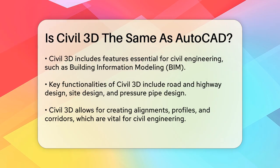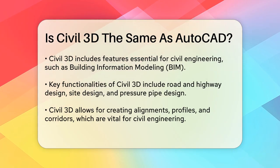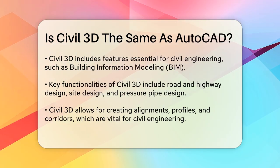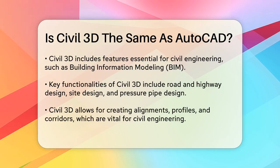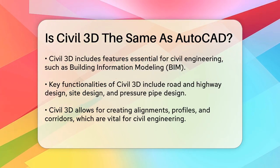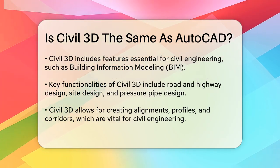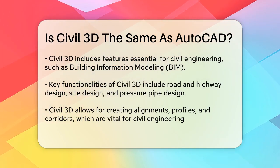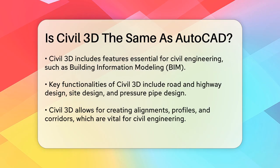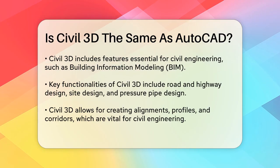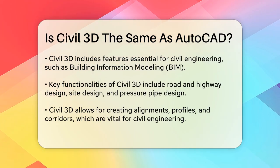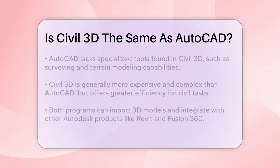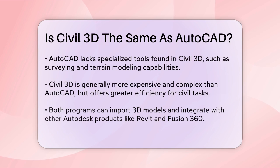One of the key differences is in their capabilities. AutoCAD has a broader range of applications but lacks the specialized tools that Civil 3D offers. For example, Civil 3D allows you to create alignments, profiles, and corridors, which are essential for civil engineering projects. It also includes features for surveying, grading, and terrain modeling, which are not available in AutoCAD.